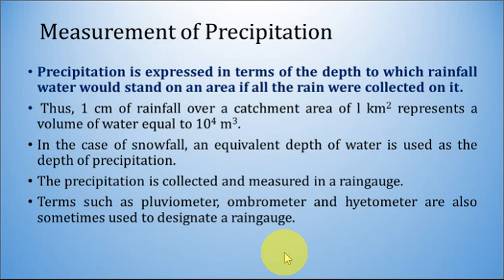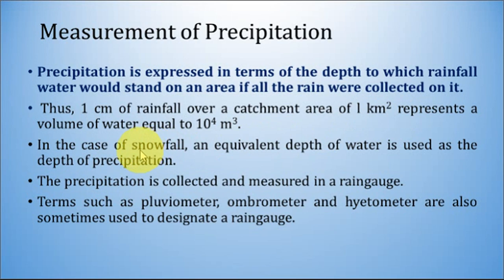One centimeter of rainfall over a catchment area of one kilometer square represents the volume of water equal to 10 to the power 4 meter cube. In the case of snowfall, an equivalent depth of water is used as the depth of precipitation because snowfall is in solid form. There should be conversion of snowfall depth to an equivalent depth of water.